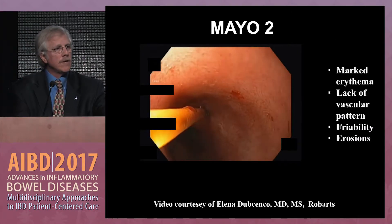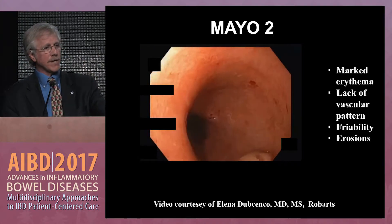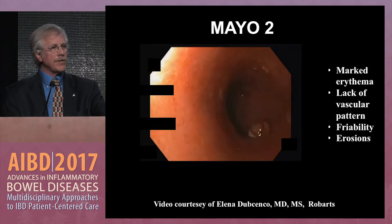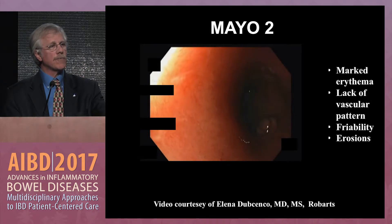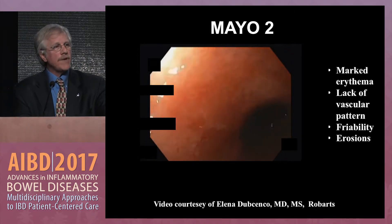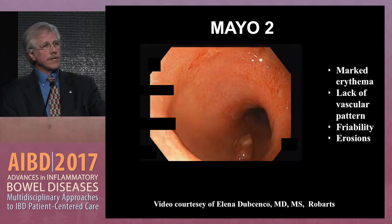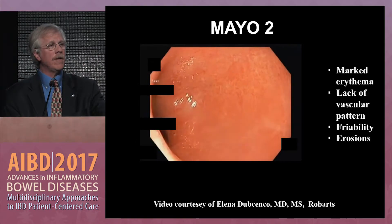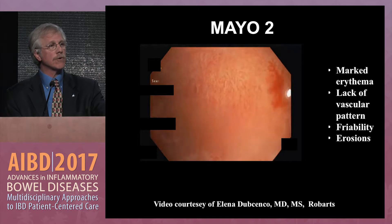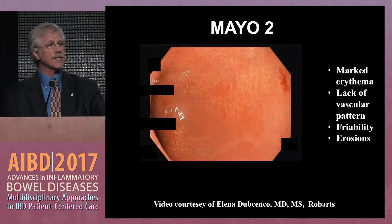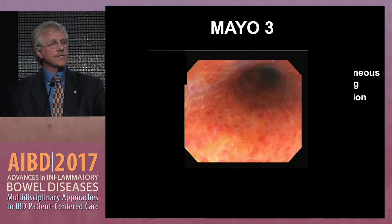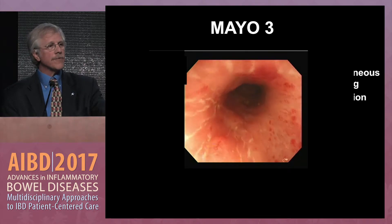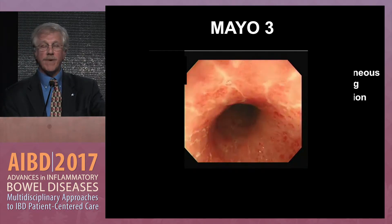This is a Mayo 2 video from Dr. Dubenko at Robarts, showing marked erythema, lack of vascular pattern, friability, pseudopolyps, and erosions. We have software in our endoscopy unit and are encouraging all our fellows and faculty to put a Mayo score into the endoscopic reporting system when doing endoscopy on patients with ulcerative colitis. For Mayo 3, these patients have spontaneous bleeding with ulcerations throughout the rectosigmoid.